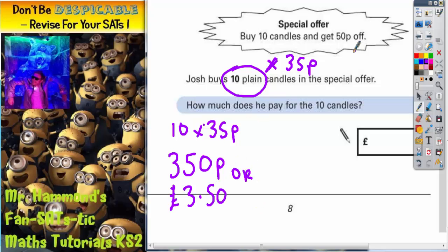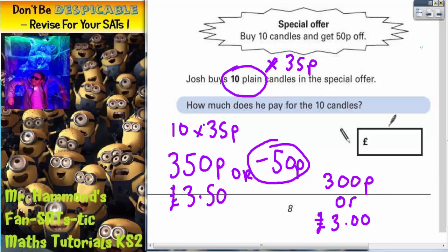Well then he's going to get fifty pence off. Well if you take fifty pence off, take away your fifty pence. If you take fifty pence off you're going to be left with either three hundred pence or three pounds. And either of those two answers would be acceptable in your answer space.